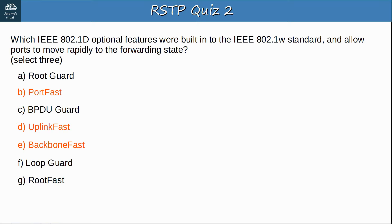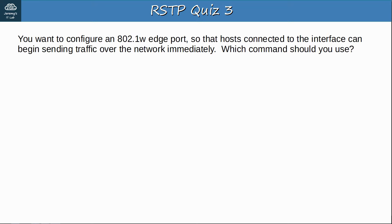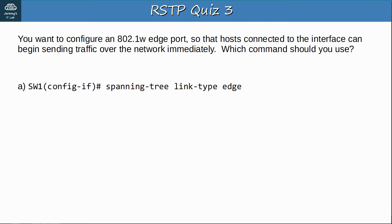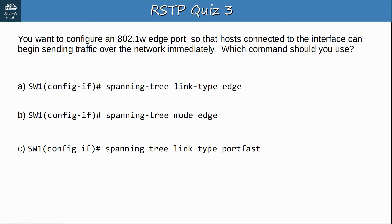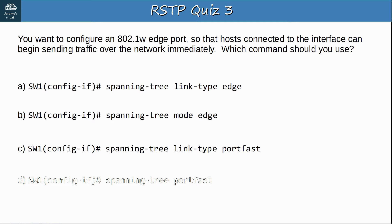Question 3: You want to configure an 802.1w edge port so that hosts connected to the interface can begin sending traffic immediately. Which command should you use? A: spanning-tree link-type edge. B: spanning-tree mode edge. C: spanning-tree link-type portfast. D: spanning-tree portfast. The answer is D — spanning-tree portfast. Although edge is a link type in RSTP, you don't use the spanning-tree link-type command to configure it, and the command doesn't even include the word edge. To configure an RSTP edge port, simply configure portfast with the command 'spanning-tree portfast'.